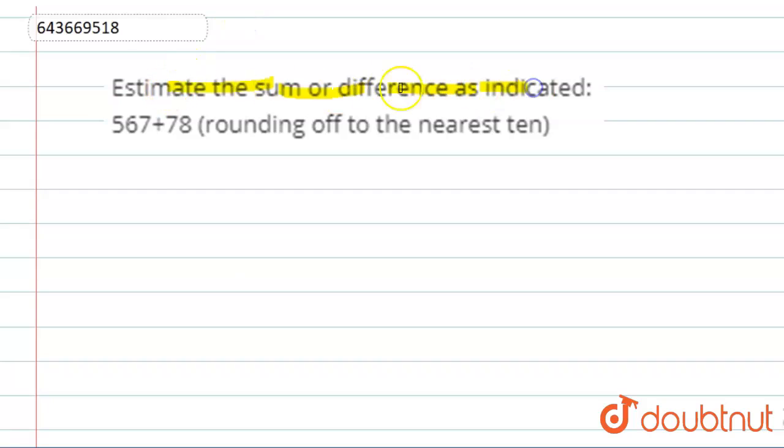Estimate the sum and difference as indicated: 567 plus 78, rounding off to the nearest ten.